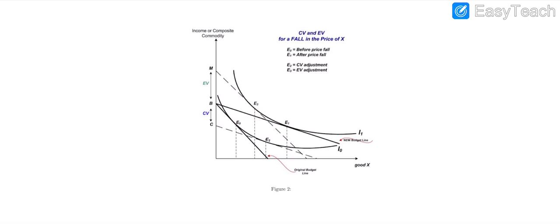When the price of X falls, you can see E0 is actually the equilibrium before the price fall, and E1 is after the price fall. Similarly, E2 is the CV adjustment while E3 is the EV adjustment.